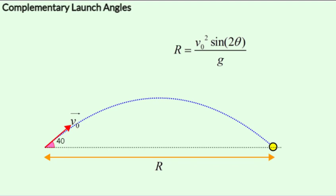Which means that if we launch a projectile at 50 degrees, we would get the same range as we have achieved with 40 degrees. Let's try it out.